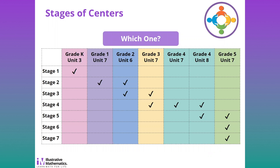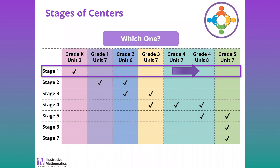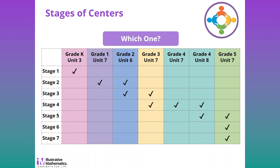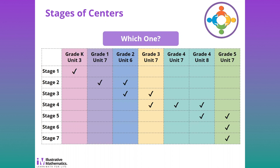This diagram shows what is meant by stages of a center. 'Which One' is a geometry center played in various stages from kindergarten through fifth grade. Generally the directions stay the same, but as they move through the stages it increases in complexity. In kindergarten, the center is played with circles, squares, and triangles. By fifth grade, students are using a variety of quadrilaterals and explaining the attributes of different quadrilaterals and various polygons.